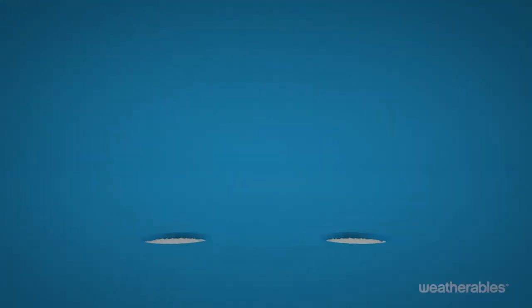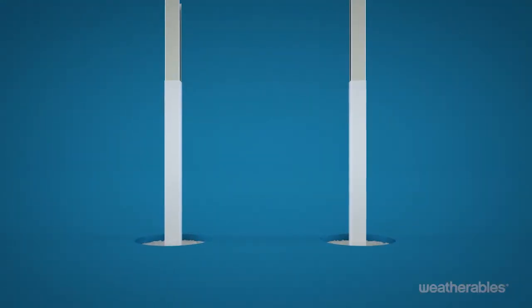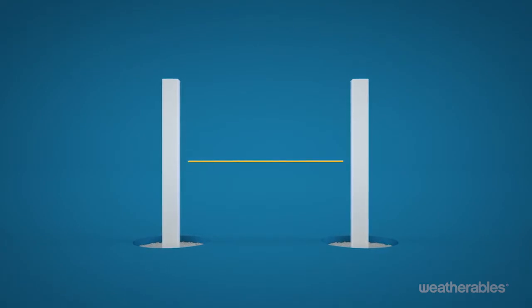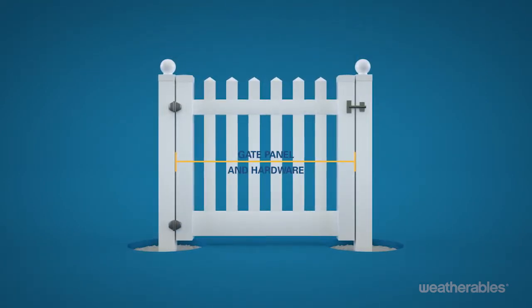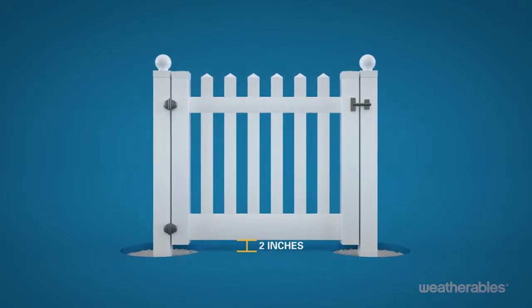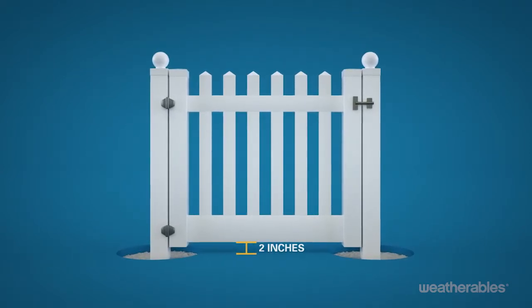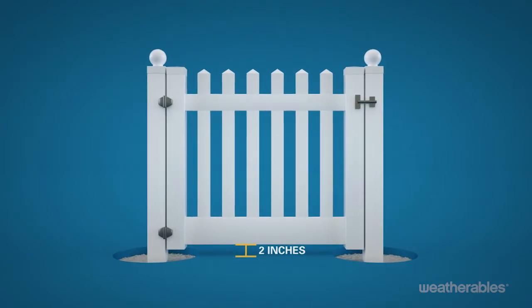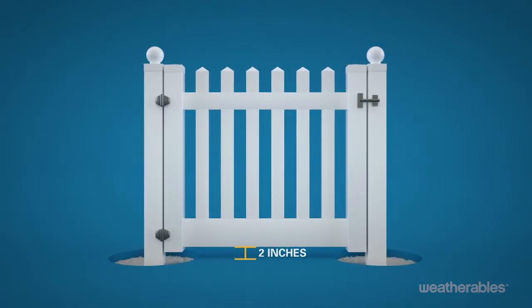First, set your gate posts with the aluminum inserts, being sure to allow enough space to accommodate both the gate panel and the gate hardware. You'll also want to allow a clearing of at least two inches between the bottom of the panel and the ground. This is a critical step since the gate will set the height for the rest of the fence.